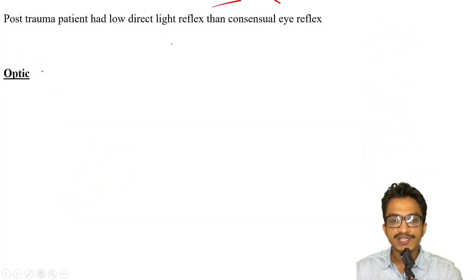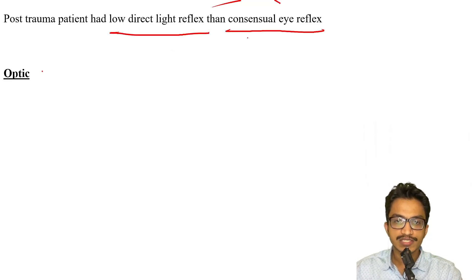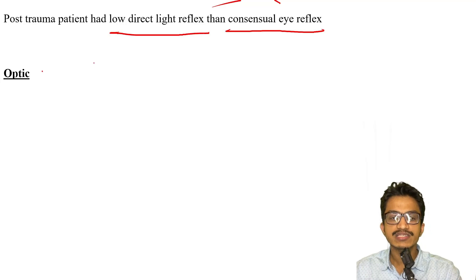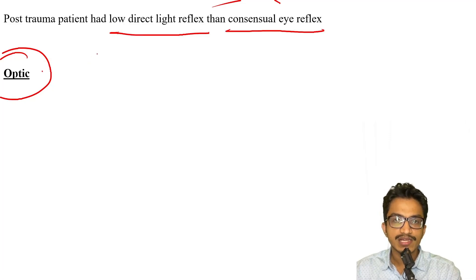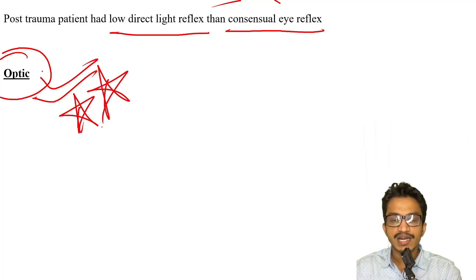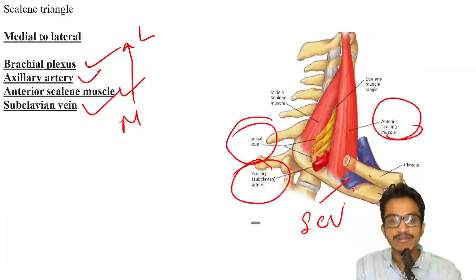For the last question: a patient with trauma showing low direct light reflex but normal consensual eye reflex. I could not find a direct reference, but based on articles I believe the answer should be optic nerve injury. I will still try to find an accurate reference and will update if there are any discrepancies.